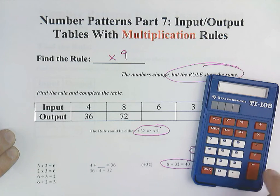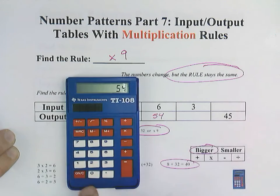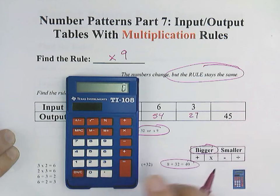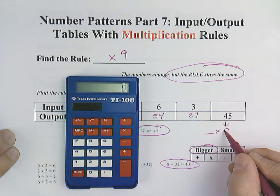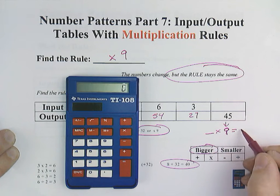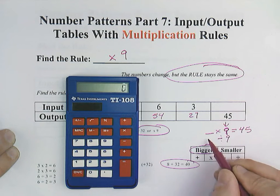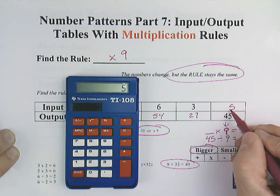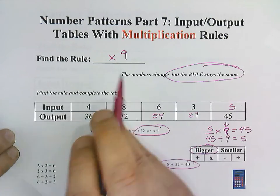6 times 9 would equal 54. 3 times 9 is 27. Here what we're going to do is, I'll show that down here, it's going to be blank times 9 equals 45. Because of fact families, I can divide by 9. So in other words, 45 divided by 9 would equal 5. And we know that's true because we can interchange those numbers when we use fact families. So our rule for this input output table is times 9.